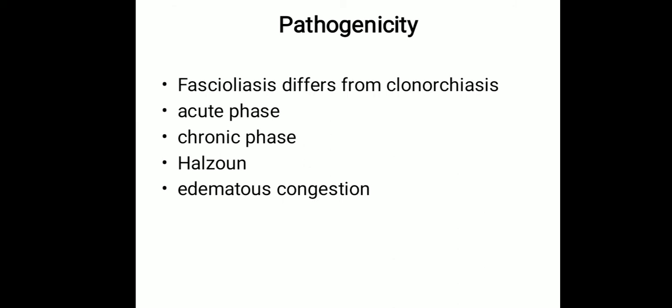Some larvae penetrate right through the liver and diaphragm, ending up in the lungs. In the acute phase, during the migration of the larva, patients present with fever, right upper quadrant pain, eosinophilia, and tender hepatomegaly. The symptoms subside as the parasites reach their final destination.